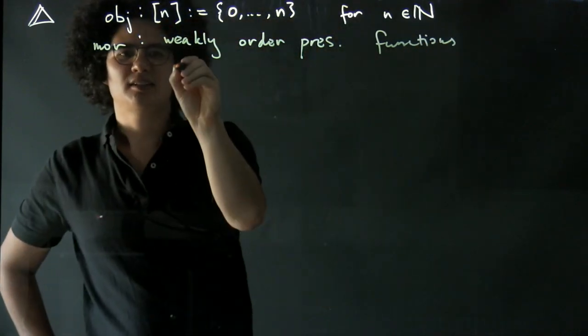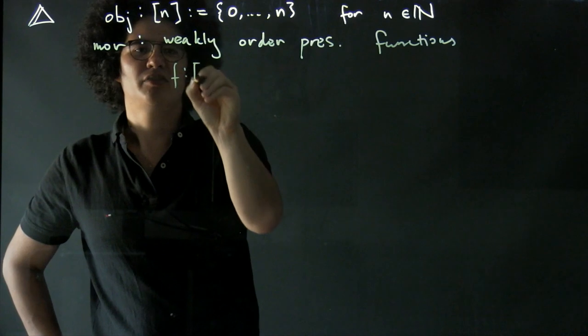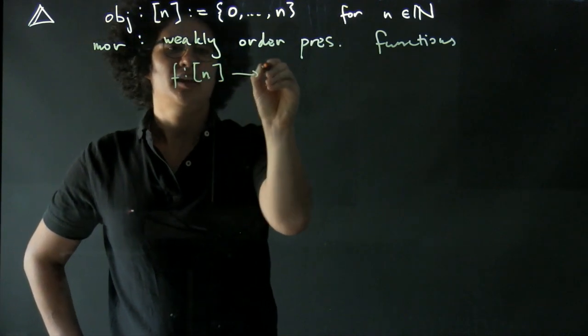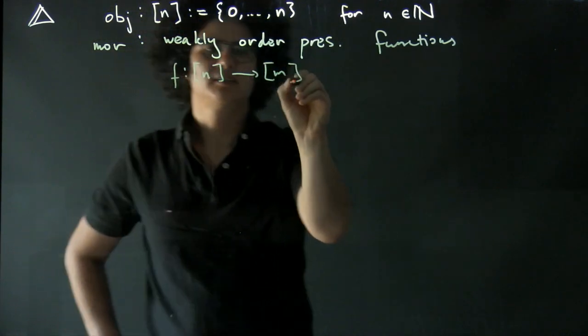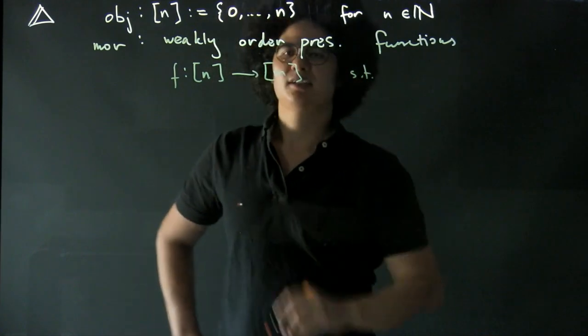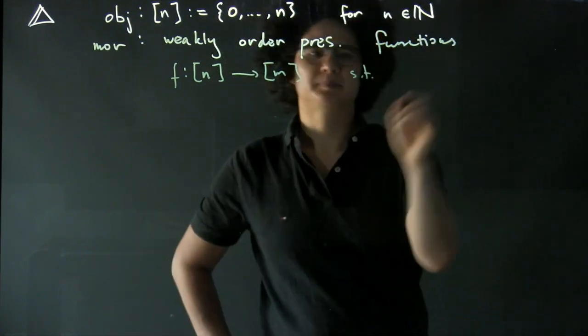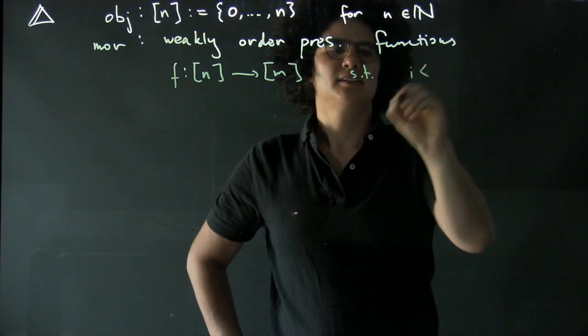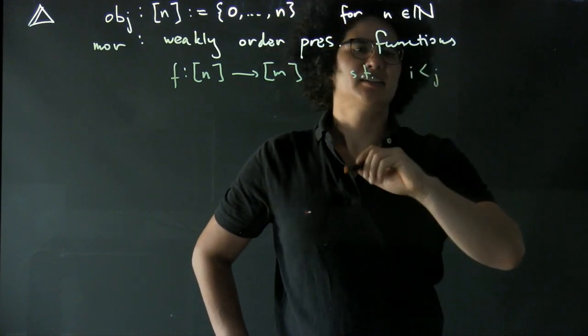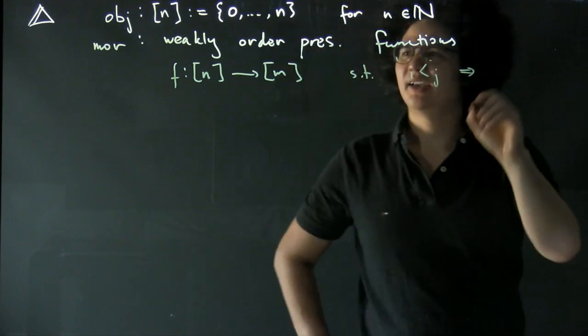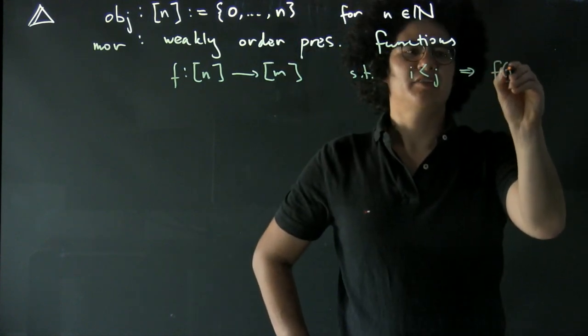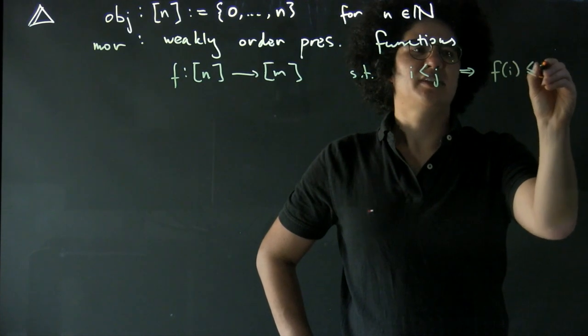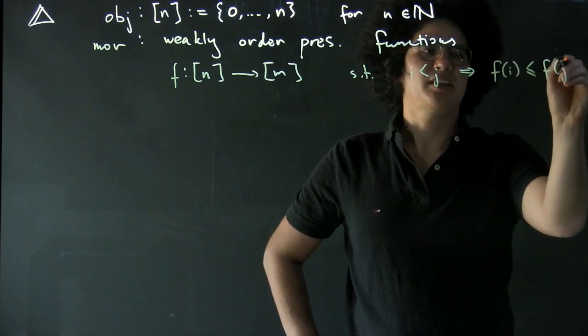So that is, say some function f from n to m, such that i less than j implies that f of i is less than or equal to f of j.